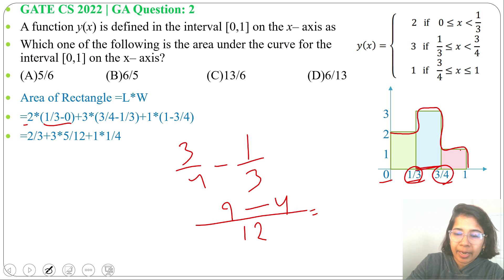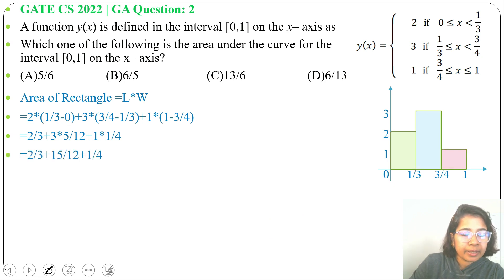So we will get 9 - 4 = 5/12 times 3, it will be 15/12. Next 1 times (1 - 3/4) is 1/4. Now we got 2/3 + 15/12 + 1/4.